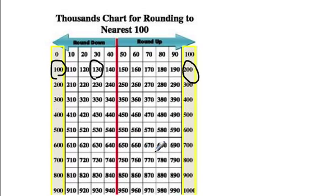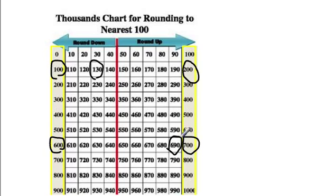If we take 690, my two boundary numbers are 600 and 700. 690 is closest to 700, so 690 rounded to the nearest 100 is 700.